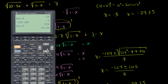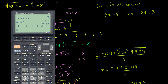Let's try x equals negative 3. We take the square root of 10 minus 5 times negative 3, plus the square root of 1 minus negative 3. That equals 7. So negative 3 definitely works.